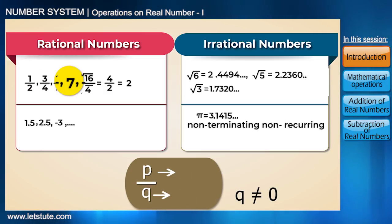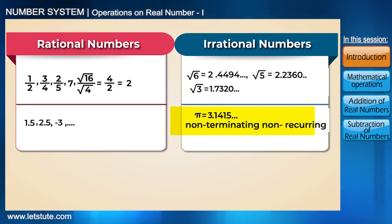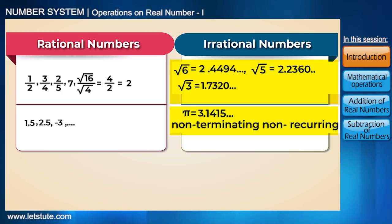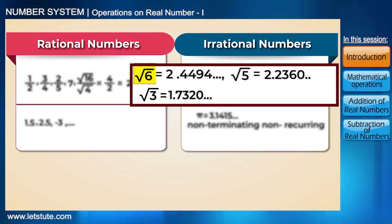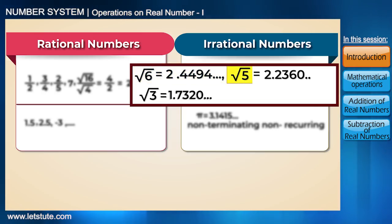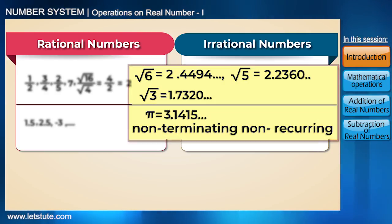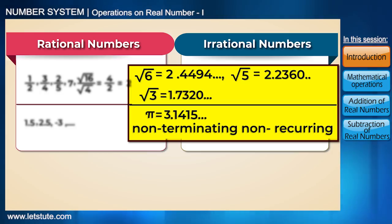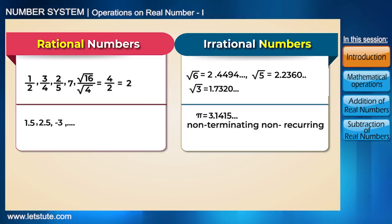Another example: 7 can be written as 7 divided by 1, where p equals 7 and q equals 1. An irrational number is the opposite — one that cannot be written as a ratio of two integers. For example, root 6 equals 2.4494... and root 5 equals 2.2360... These are non-terminating, non-recurring decimals. Together, rational and irrational numbers form the real numbers.